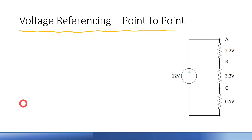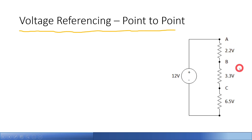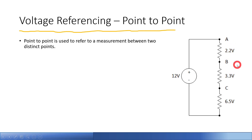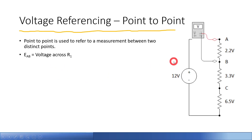Here's a new concept: voltage referencing. We place small reference points called nodes — labeled A, B, C — on the circuit diagram, like street signs at an intersection. A point-to-point measurement is used to reference between two distinct points. EAB is the voltage between point A and point B.